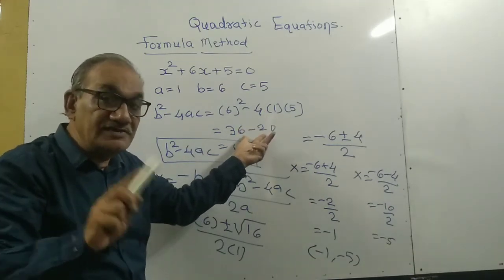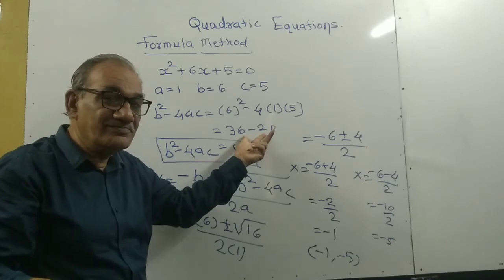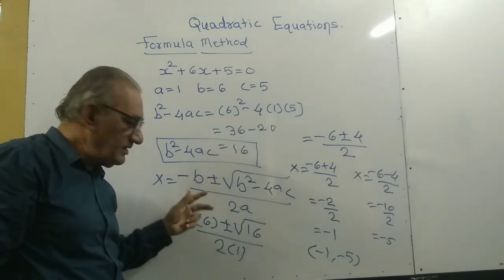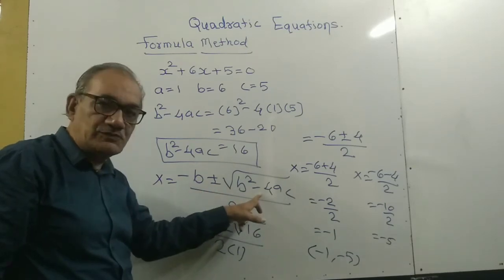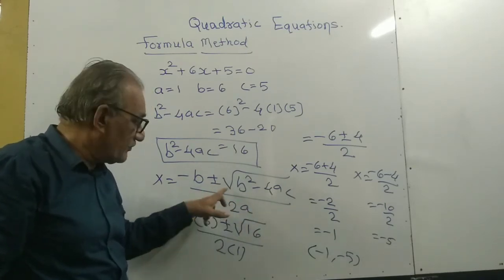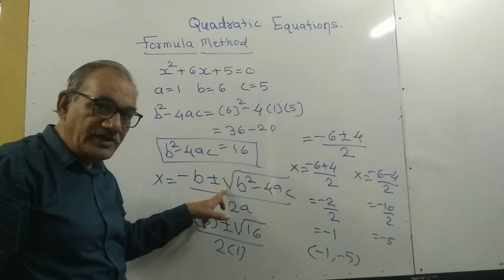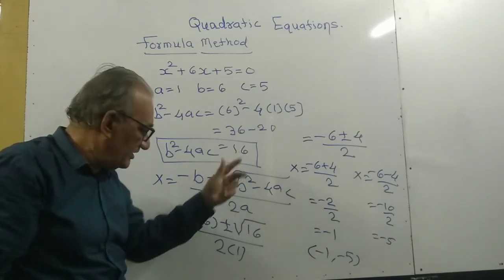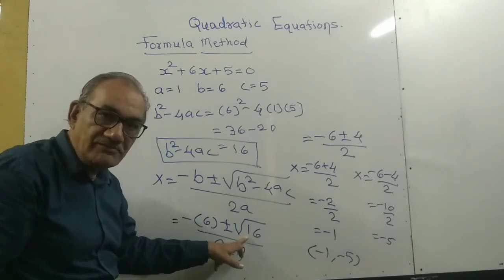Use the formula -b ± √(b² - 4ac) over 2a. Put the discriminant value into the formula.